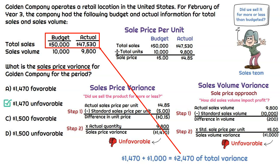Part of the shortfall was due to a lower sales price and part was due to sales volume falling short of budget. Within a company, different individuals might be responsible for different aspects of the sales process, but that is how you would describe the shortfall in revenue — it was a combination of a lower sales price and lower volume. That's how we use both variances to identify the real drivers of variances in a business.